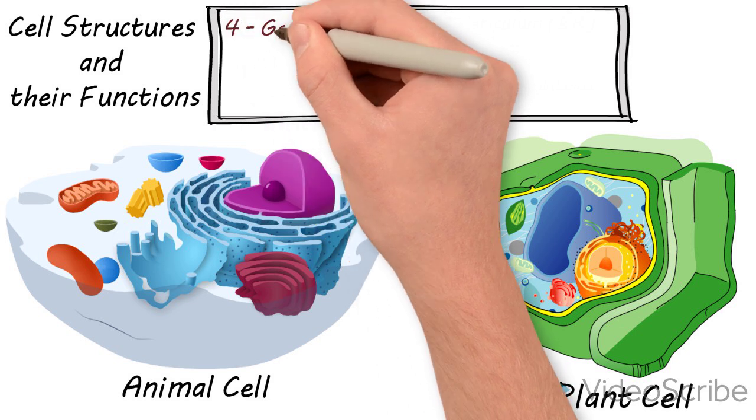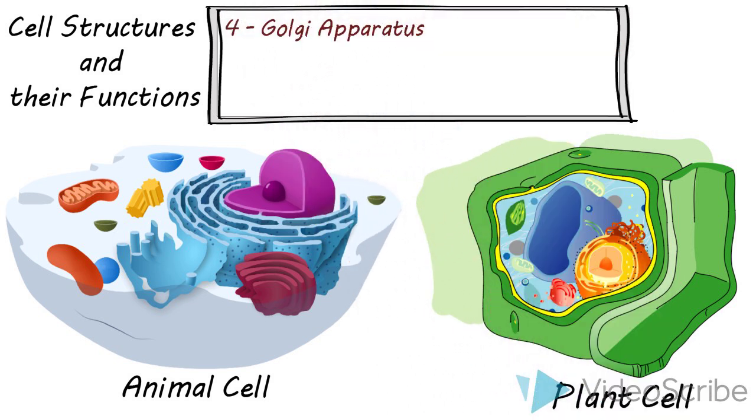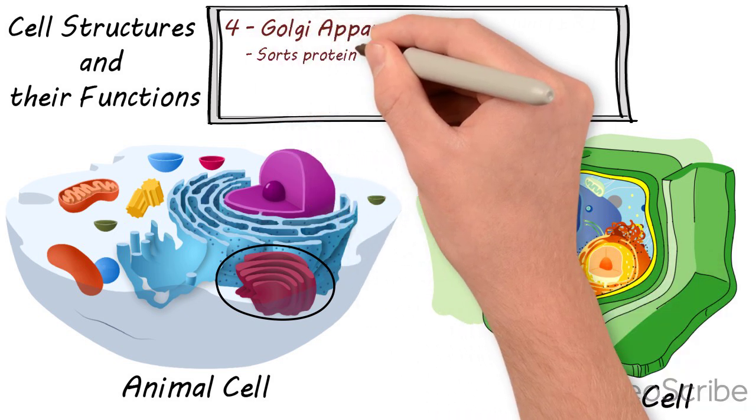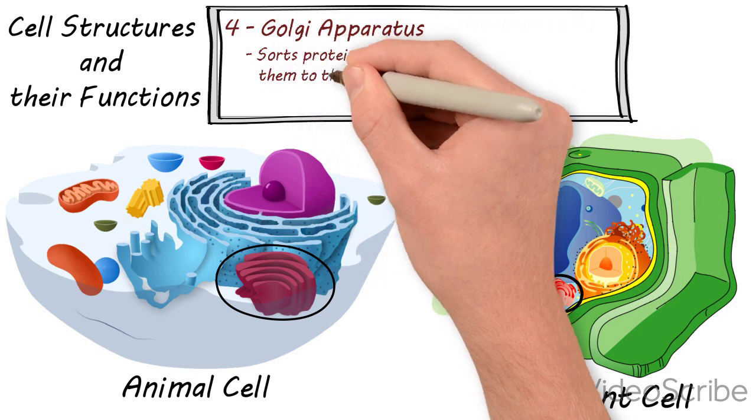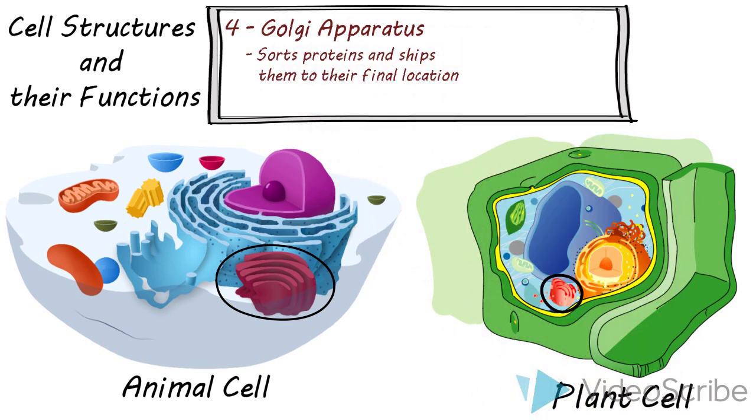Next we have the Golgi apparatus or the Golgi complex. The Golgi apparatus is sort of the sorting and shipping center of the cell. It sorts proteins and then ships them to their final locations.